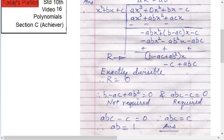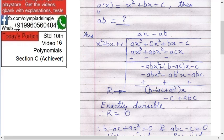What you get remainder is, this first is gone. Second for x what you get is b - ac + ab². (b - ac + ab²)x. And here -c + abc. Now it is given that it is exactly divisible. It means remainder will be 0. Now remainder will be 0 means what?